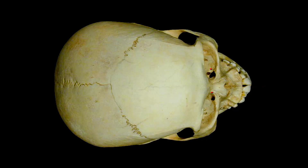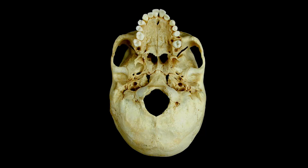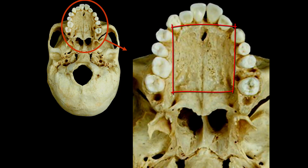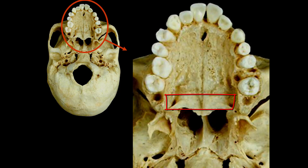Looking down into the eye socket, we find the nasolacrimal canal. If we enlarge the view near the teeth and the palate area — these teeth are the incisors, so this hole right here is the incisive fossa or incisive foramen. This portion is the palatine process of the maxilla, and this is the actual palatine bone.